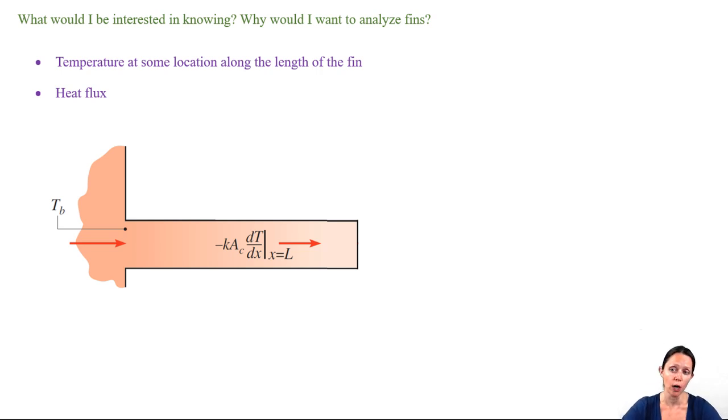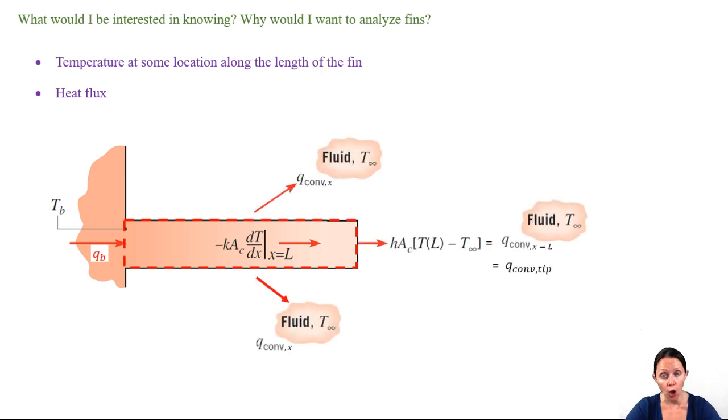Let's also draw a control volume around our fin. The heat transfer rate from the base into the pin is Q with a little subscript B, or the heat transfer at the base, heat transfer rate at the base. Now you have conduction along the fin in the x direction from left to right as you see indicated by Fourier's law, but you also have heat being removed along the way through the surface area.